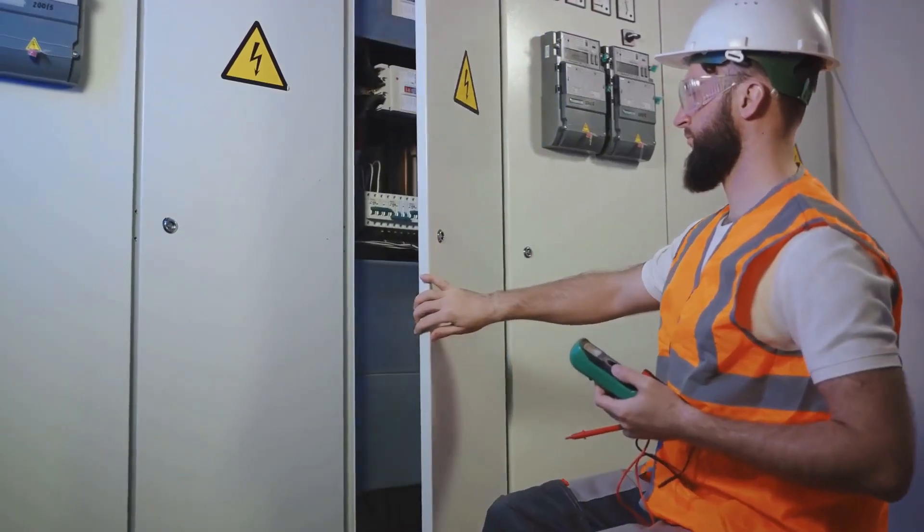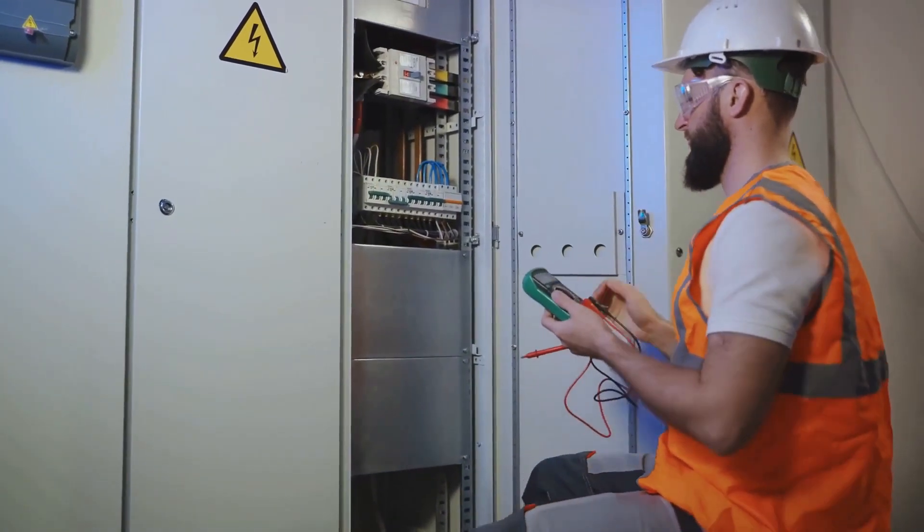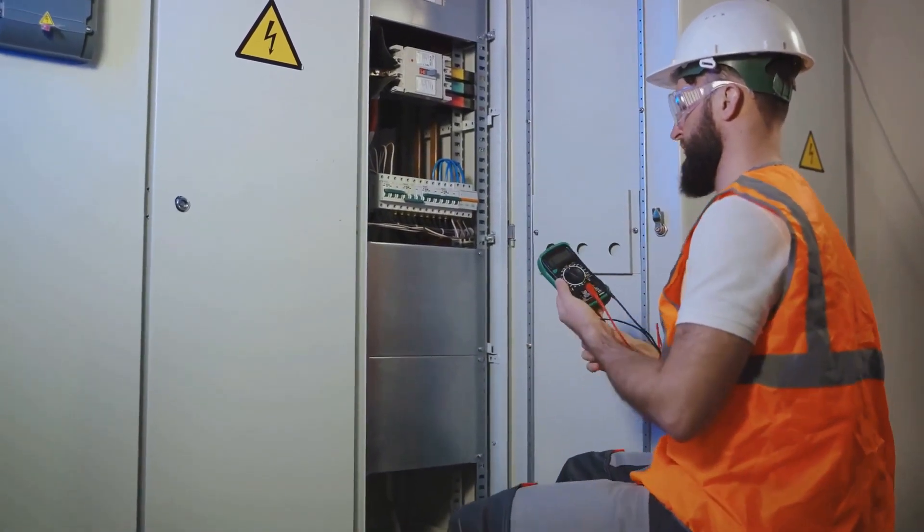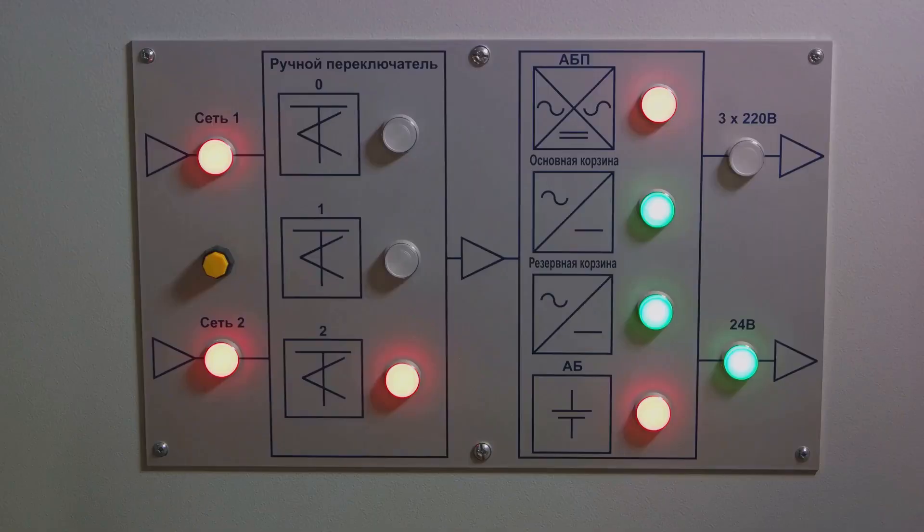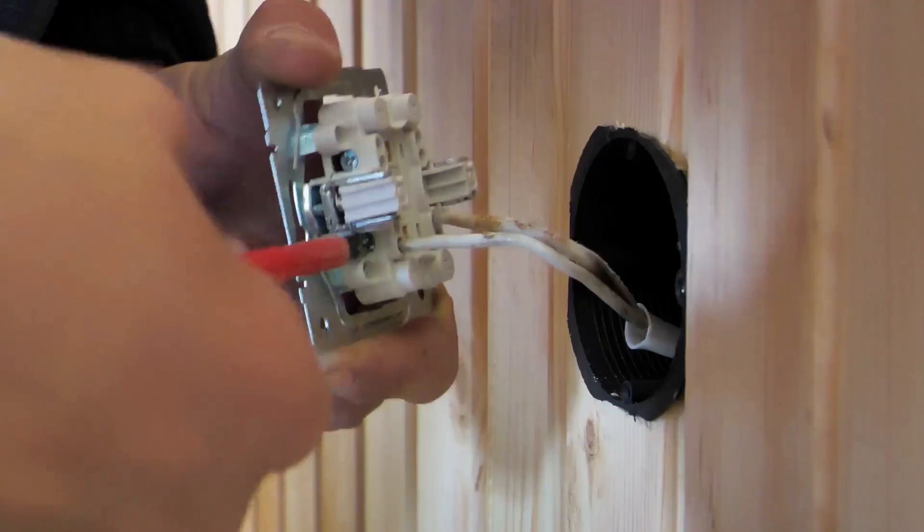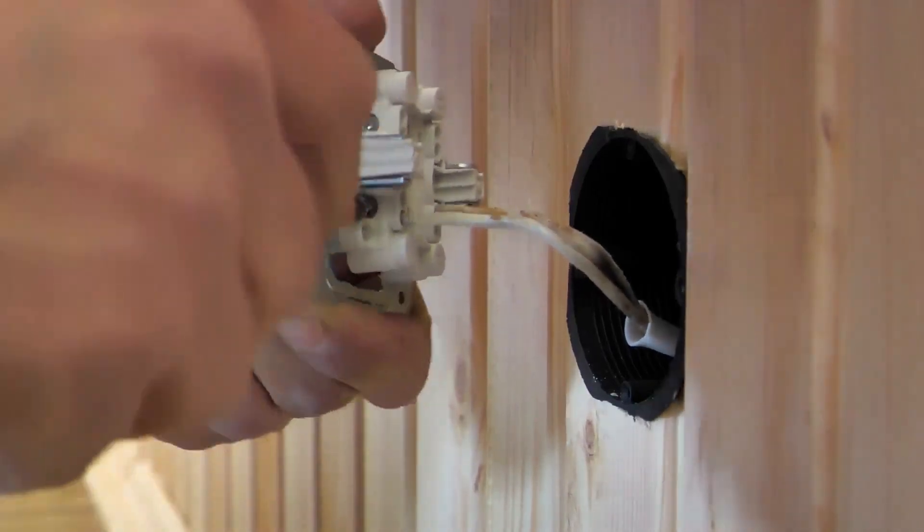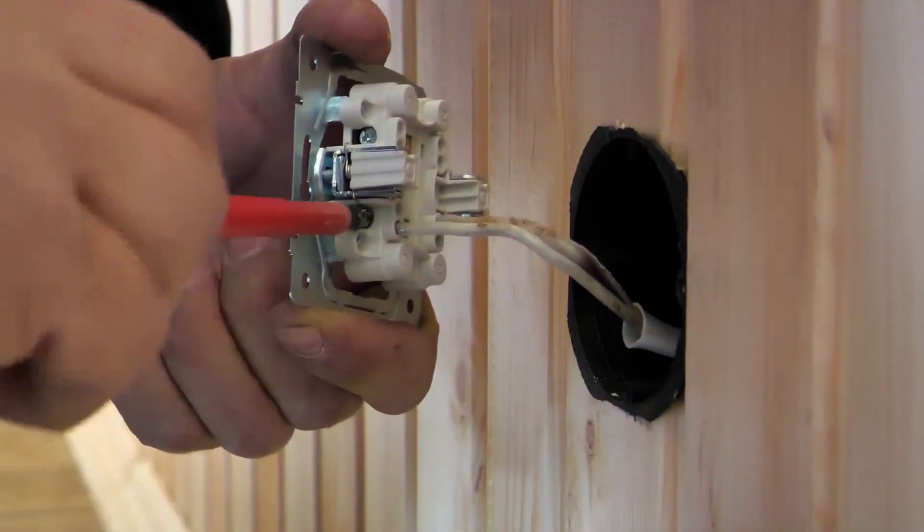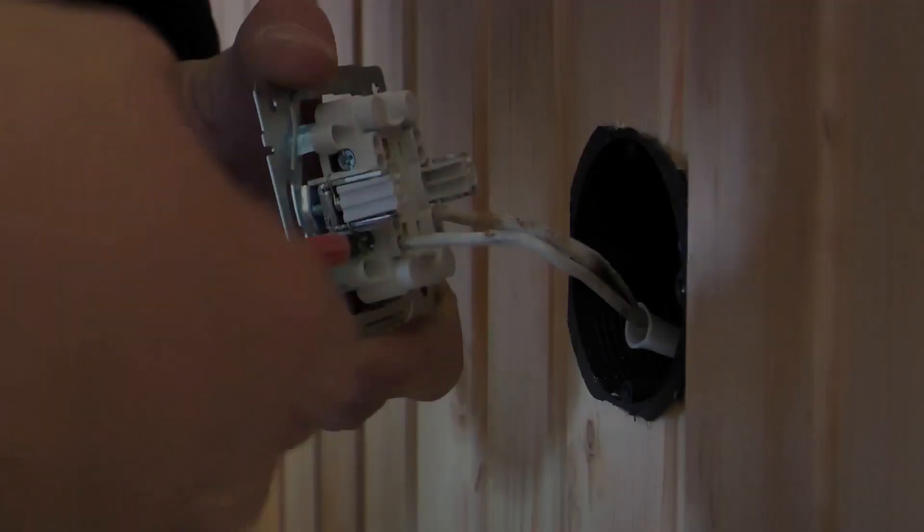If it detects a difference between the current flowing in the live and neutral wires, the RCCB springs into action, tripping the breaker and preventing potentially fatal electric shocks. You'll typically find RCCBs in residential and commercial buildings, constantly safeguarding people from harm.